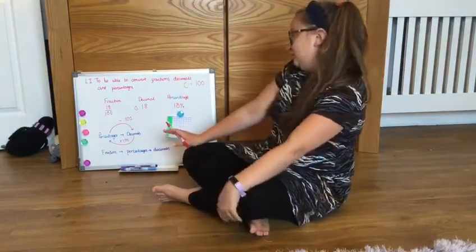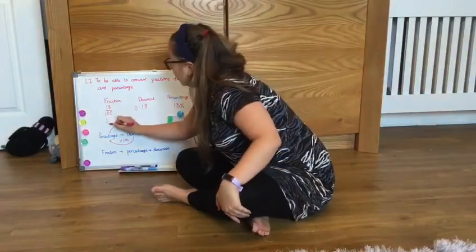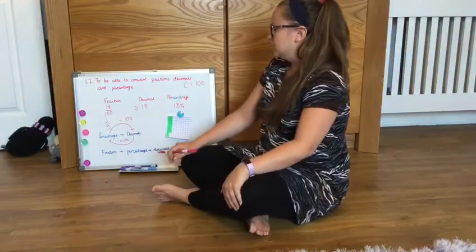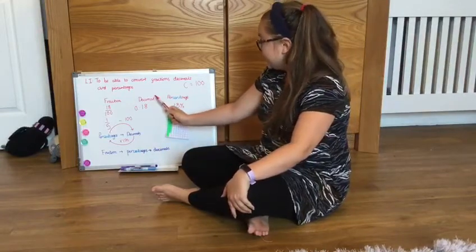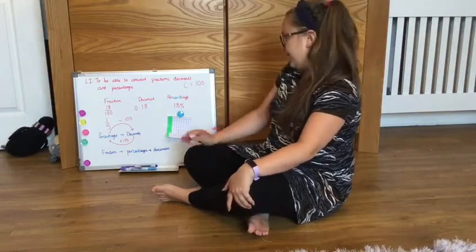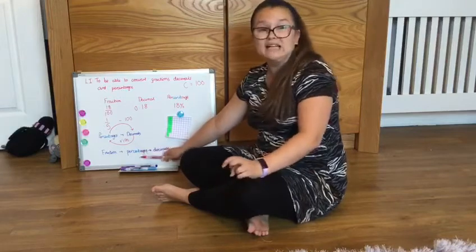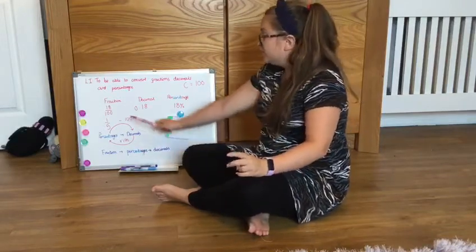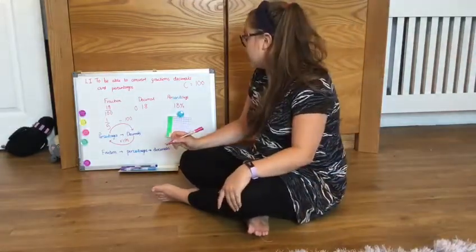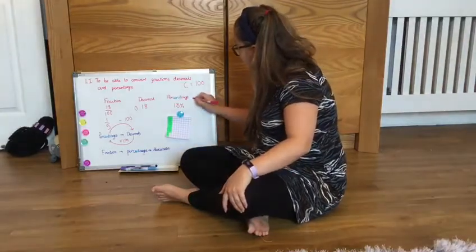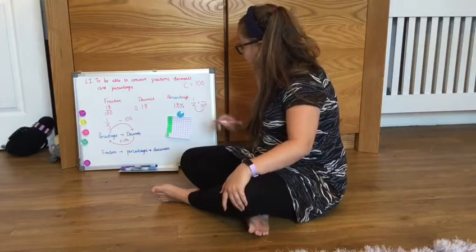If I had a fraction that wasn't out of 100, say I had a fifth - I'm going to write 1 over 5. Well the easiest way to work out my decimal and my percentage is to find the percentage - that is, finding what it is out of 100 first - and then convert it to my decimal. So I've got to make that into an equivalent fraction, which we spoke about the other day. So I write 1 fifth equals, and I've got to turn that into my hundredths.